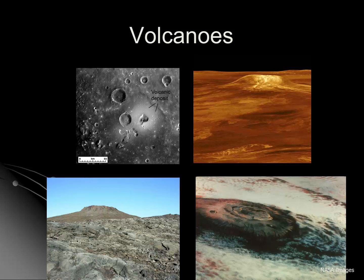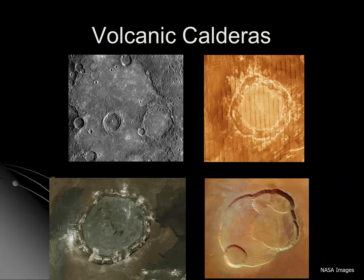Olympus Mons is an enormous volcano. Speaking of volcanoes, they have similar volcanic features. Calderas often form when a magma chamber collapses. Here we can see evidence of calderas on Mercury, Venus, Earth — yes, that's from Kilauea Volcano in Hawaii — and on Mars.